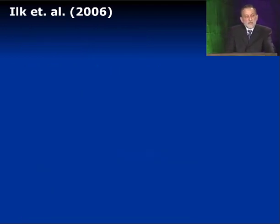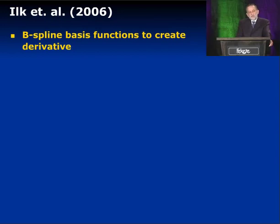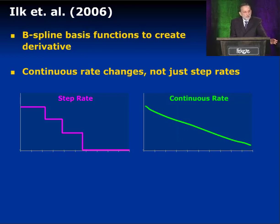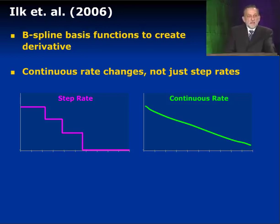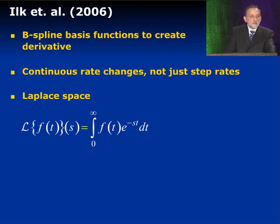Ilk et al. at Texas A&M did something different with their derivative. Instead of assuming points along the derivative curve, they assumed a continuous function consisting of B-splines. By defining the derivative this way, their rates don't have to be step rates — they can be a continuous rate. So if you have a continuously declining flow rate, you can use this method very easily. And because they used analytical functions for the derivative, they're able to solve the whole problem in Laplace space.